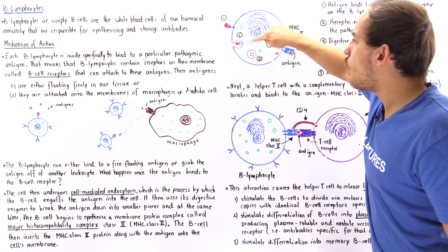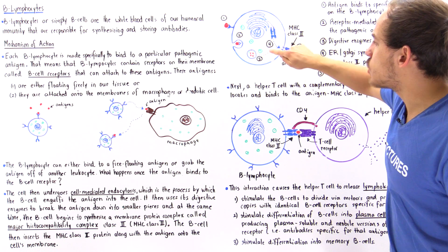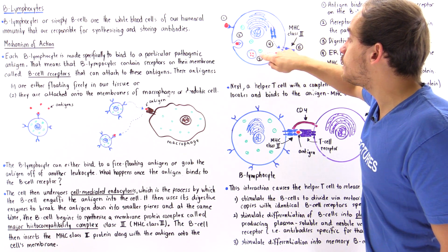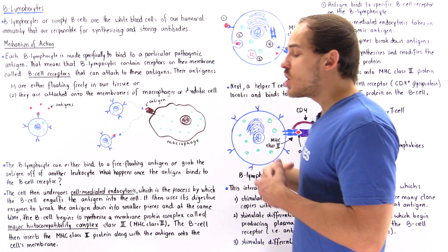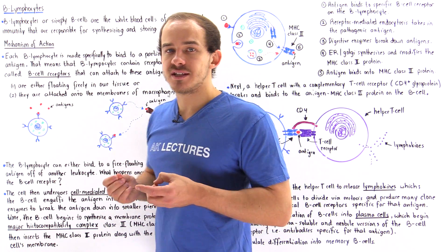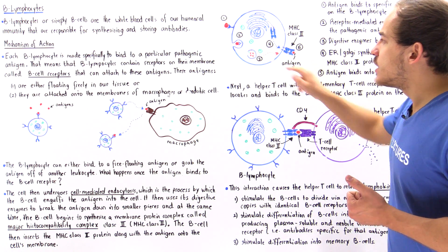The cell also has lysosomes, shown in green, and they can fuse with this vesicle. These lysosomes release digestive enzymes that can proteolytically break down the antigen.